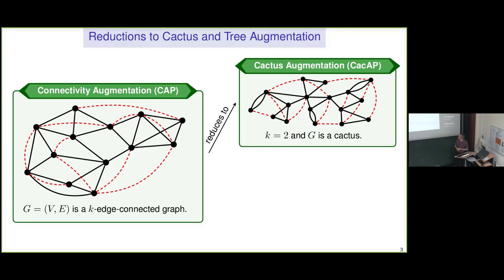What's a cactus? A cactus is a connected graph where every edge is in precisely one cycle. You can think of it as a tree where you replace edges by cycles. Why is the problem equivalent to cactus augmentation? The problem is really about hitting all those min-cuts. There are well-known results about the structure of min-cuts in graphs: for any graph, the min-cuts can be represented by the two-cuts of a cactus.